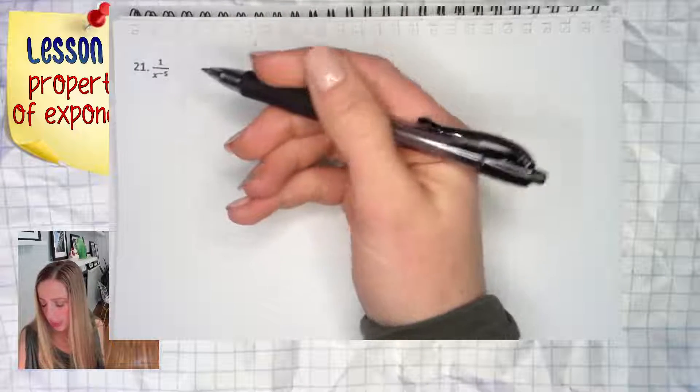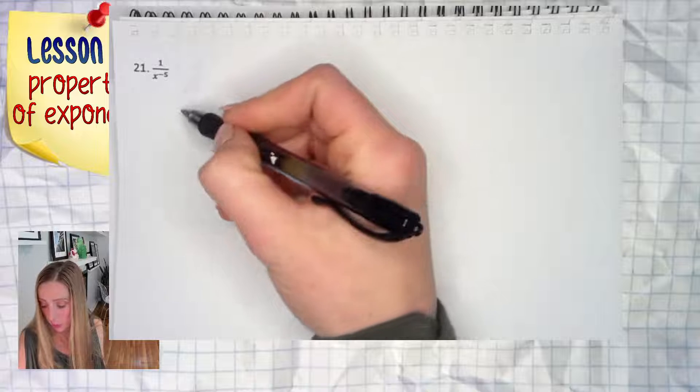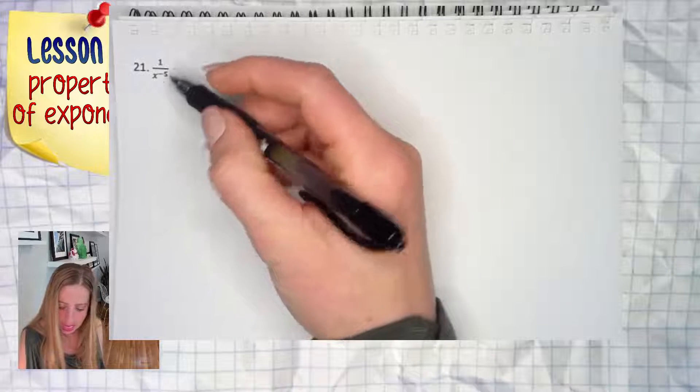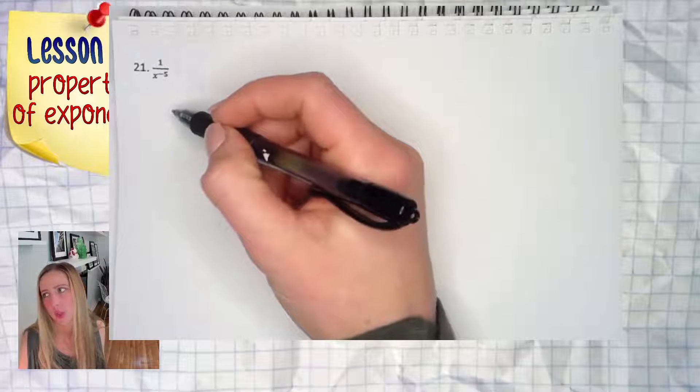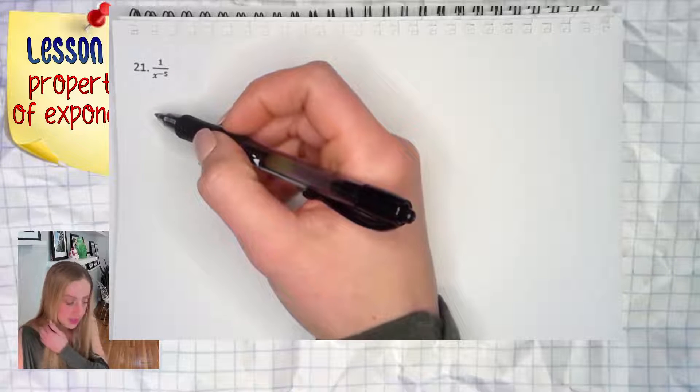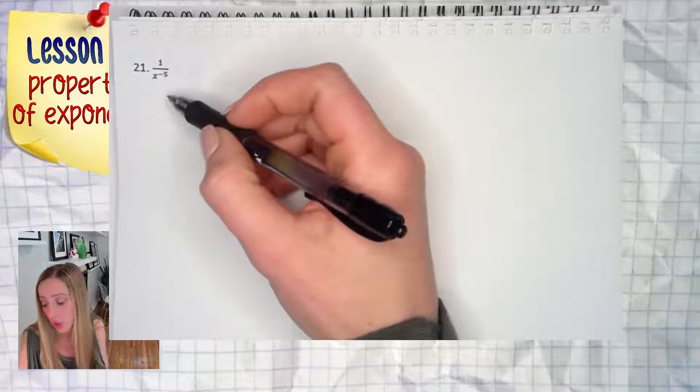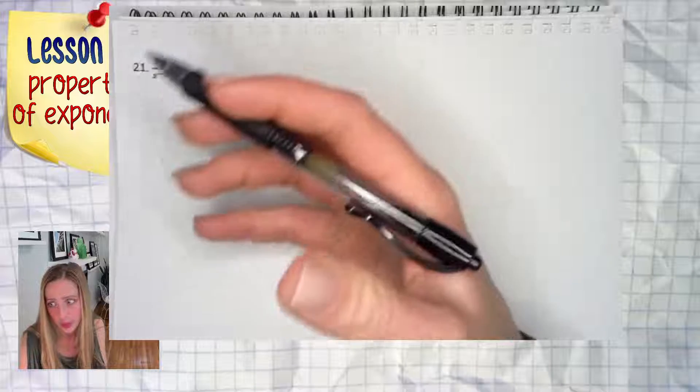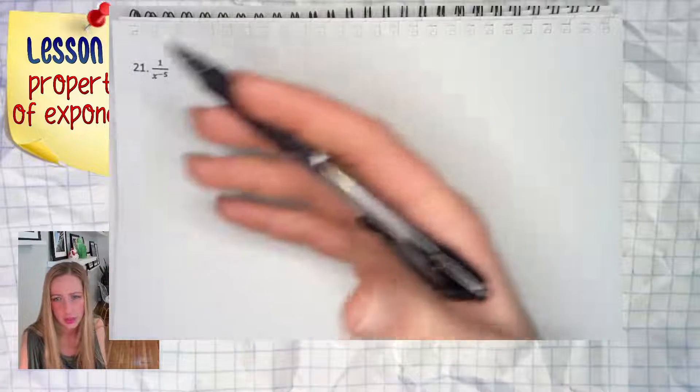In this example, we have 1 over a variable raised to a negative exponent. When we have a variable with a negative exponent, I'm noticing people are treating these examples a little bit differently than when they have a constant raised to a negative exponent or a constant in the place where we're used to seeing x.